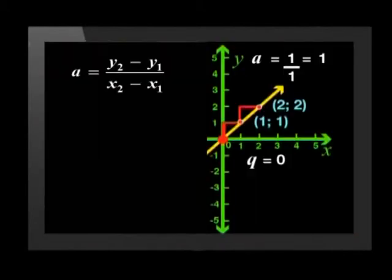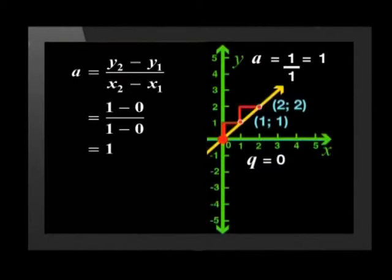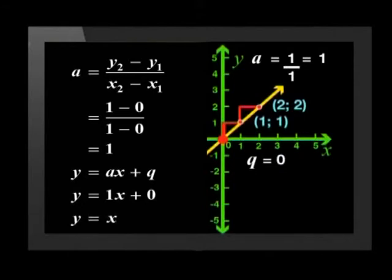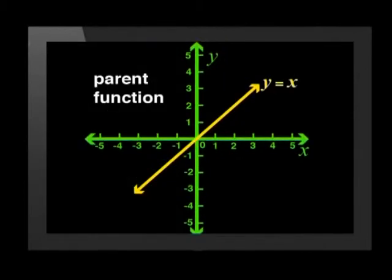Using steps on the graph is a good way to find the gradient, but you can also use the gradient formula: a equals (y2 minus y1) over (x2 minus x1). From (0, 0) to (1, 1) we get 1 minus 0 divided by 1 minus 0, which gives a gradient of 1. With a equal to 1 and q equal to 0, the formula is y equals x. This is the parent graph or parent function of the straight line graphs.